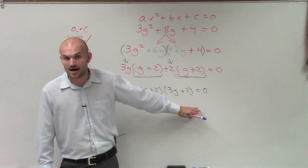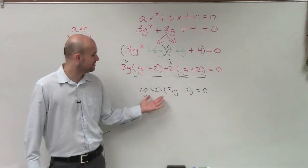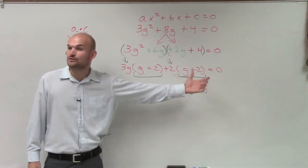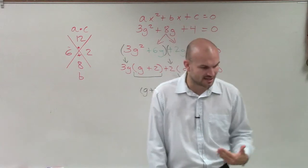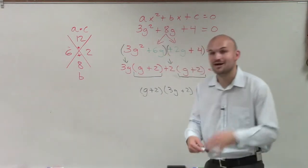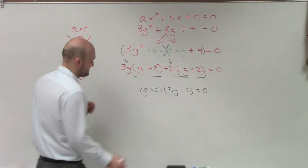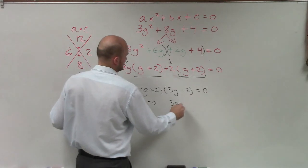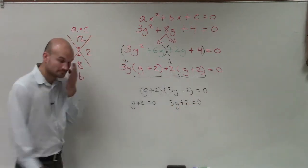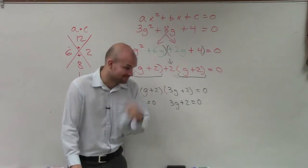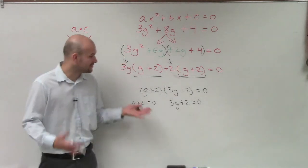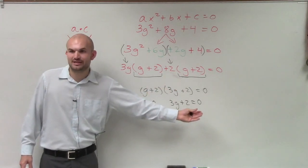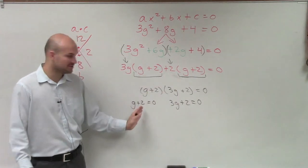What you guys need to remember now is we have one term times another term equals 0. So when you have something times something else equals 0, what the zero product property tells us is that one of them has to equal 0. So you set both expressions equal to 0.